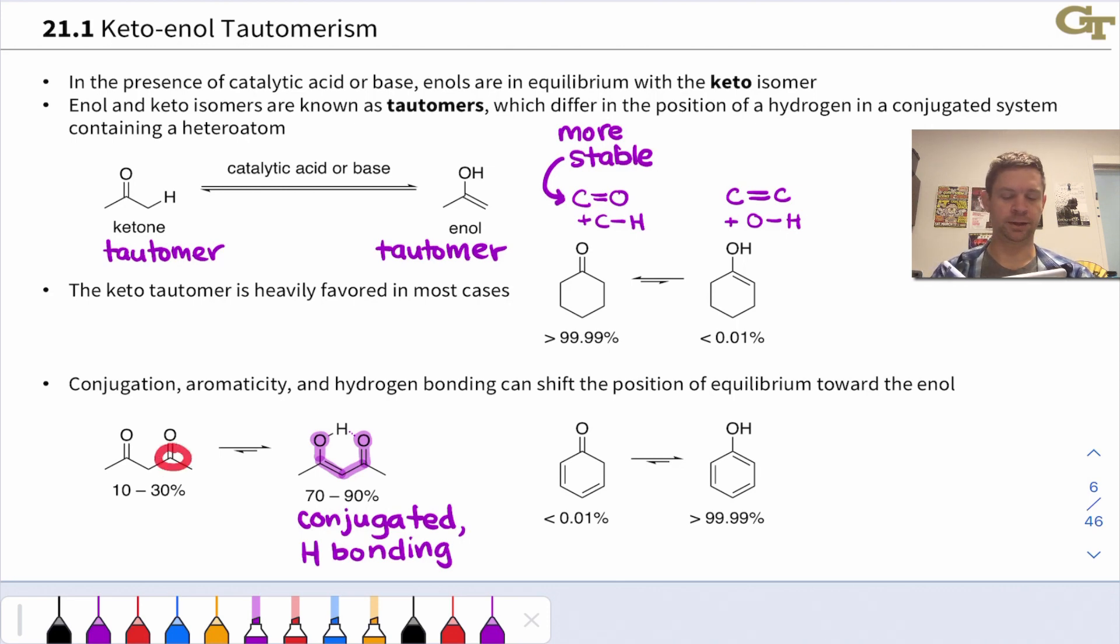These two structural factors conspire to actually make the enol form favored for acetyl acetone and related beta-dicarbonyl compounds. Notice this has a carbonyl group in a beta position relative to the other carbonyl group, and it's because we get a conjugated system. The enol oxygen is part of that full conjugated system, as well as an additional hydrogen bond, and that bonding interaction is stabilizing.